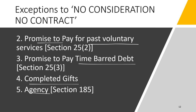Exception three: promises to pay a time-barred debt. Under the Limitation Act, there is a time limit to recover a debt. If that time has elapsed but the debtor promises to pay, such a promise is valid even without new consideration. Additional exceptions include completed gifts, for which no consideration is required, and contracts of agency, where consideration is also not required due to the special nature of agency contracts.